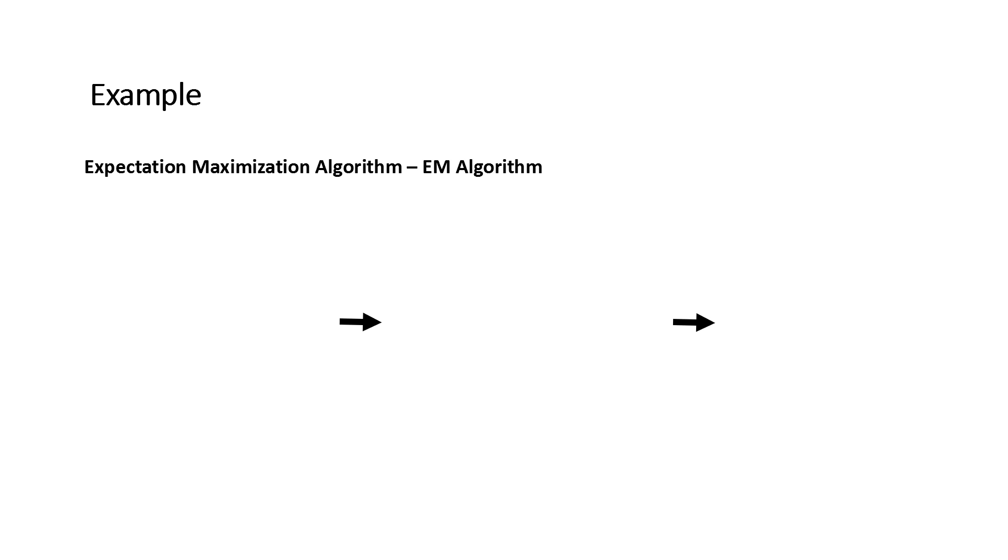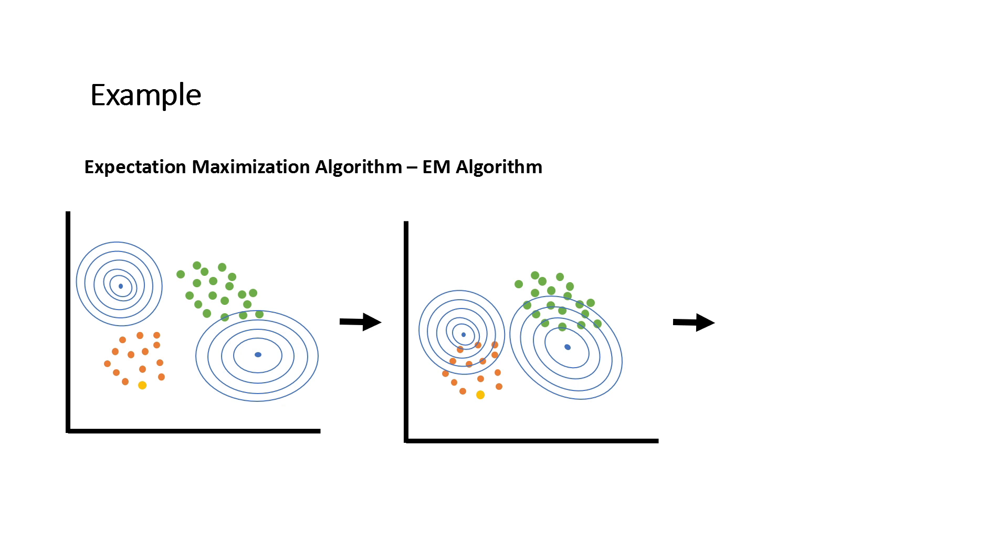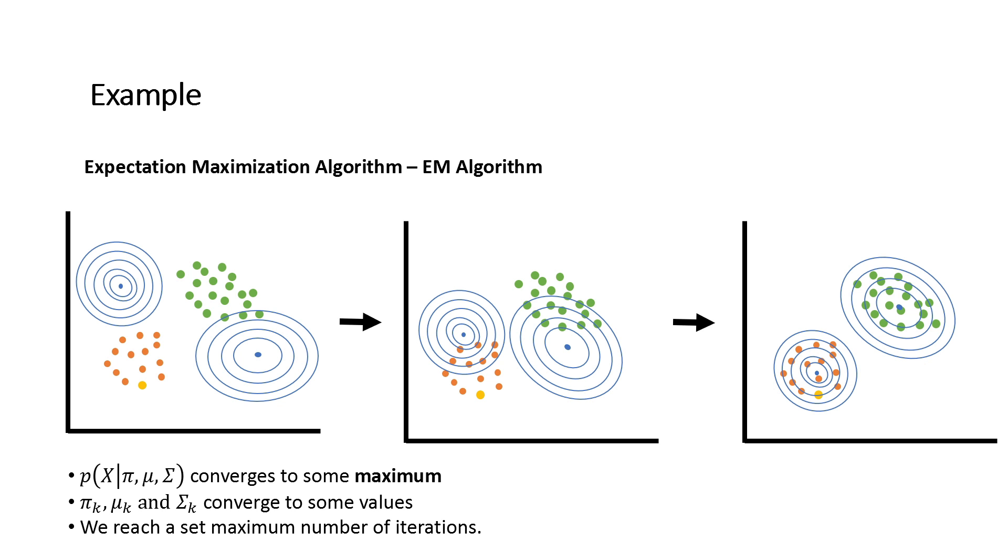I won't go into details of how this algorithm works. I might save that for a later episode. It enables us to go from random initializations of our multivariate Gaussian distributions and iterate until they fit our data. There are certain stopping criteria such as the function we wish to maximize converges to some maximum, pi_k, mu_k, and sigma_k converge to some values, or we reach a set maximum number of iterations.